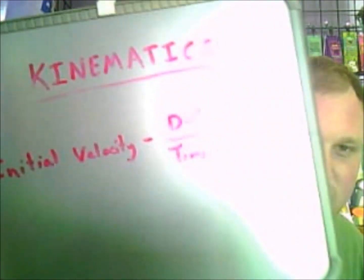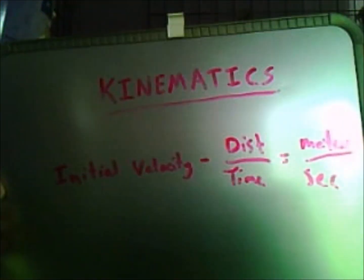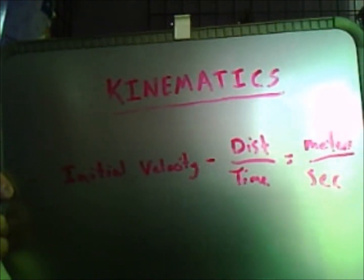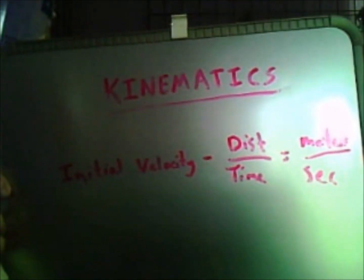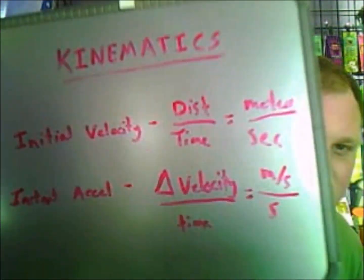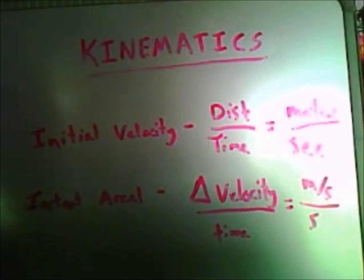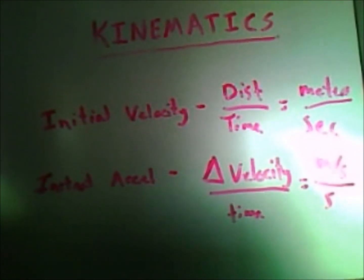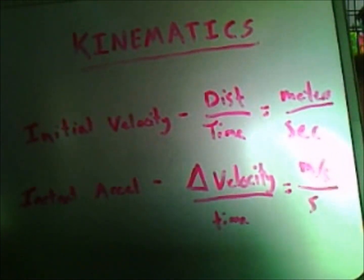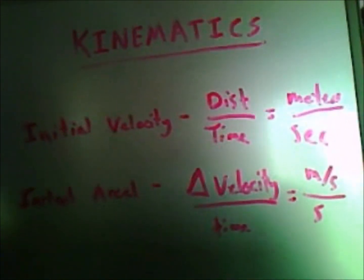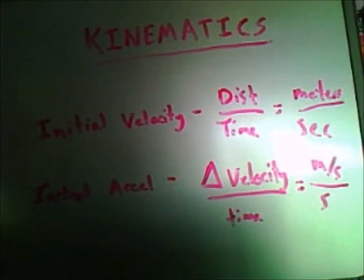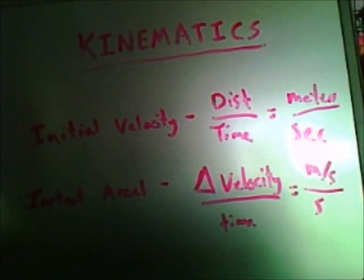To start out, initial velocity is the distance over time, which gives you meters per second — or feet per second or miles per hour. Next we have instantaneous acceleration, which is the change in velocity — your final velocity minus your initial velocity over time — which equals meters per second squared.